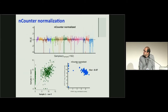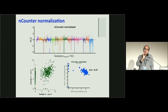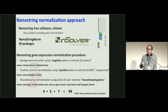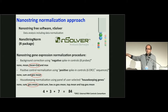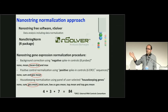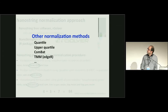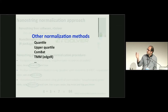Having a bad RLE plot, poor correlation between technical replicates, and wrong biology motivated me to use another normalization method. I did all 84 normalization options and none of them was good enough. I also looked at other normalization methods like quantile, upper quantile, ComBat, and TMM. They didn't work because these methods are initially designed for RNA-seq or genome-wide platforms.